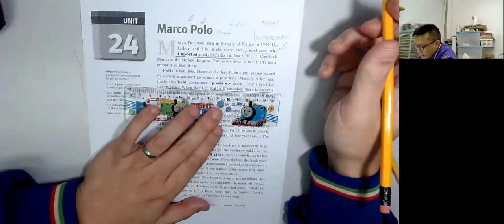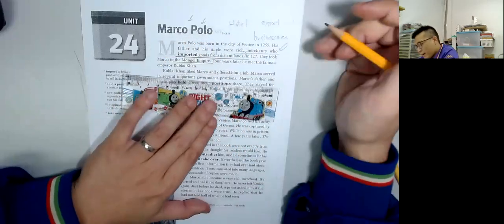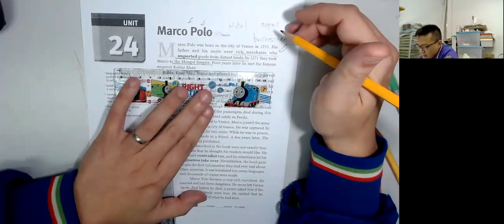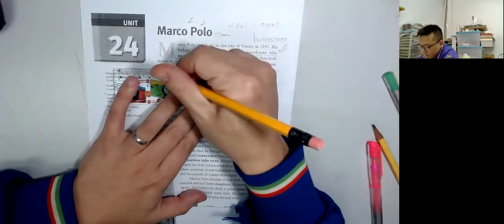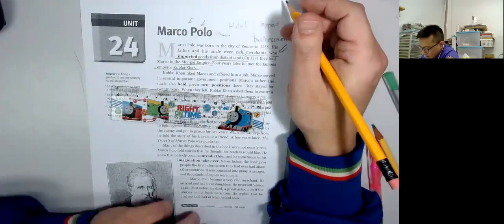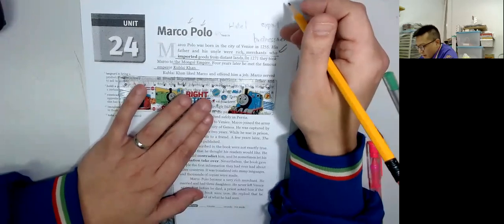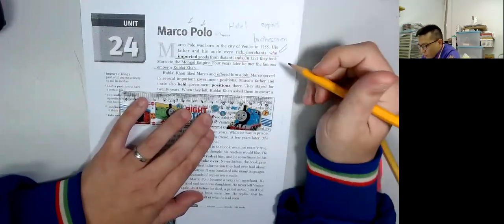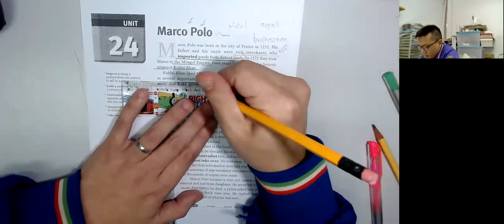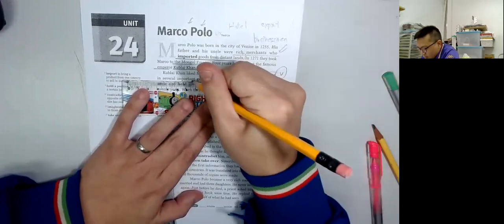In 1271, they took Marco to the Mongol Empire. Four years later, he met the famous emperor who was 成吉思汗, 努爾哈赤. He loved Marco and offered him a job. Marco served in several important government positions. Government positions.